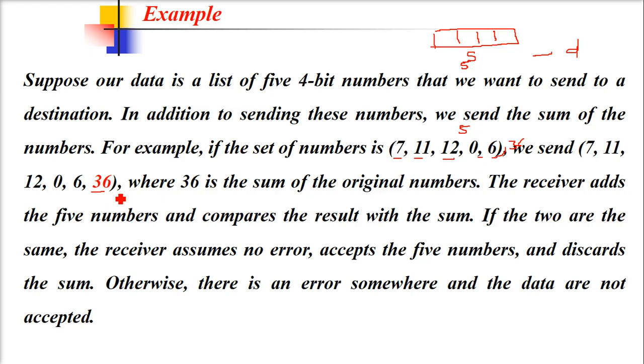The receiver adds the five numbers and compares the result with the sum. If the two are the same, the receiver assumes no error, accepts the five numbers, and discards the sum. Otherwise, there is an error somewhere and the data are not accepted, and there may be a request for retransmission.